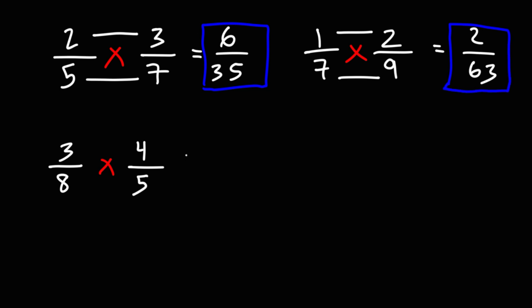Now, moving on to the third example, we have 3 times 4, which is 12. 8 times 5 is 40.